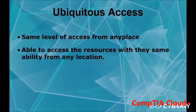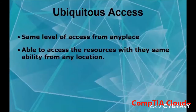Ubiquitous access is the same level of access from anywhere. You're on your phone — you're able to access it there. You're at work — you're able to access your information there. You're at home — you're accessing it there. You can be on vacation and still be able to get work done. Ubiquitous access is what really helps most companies go to the cloud, so that they can go on meetings and vacation to other countries and still do what they need to do.